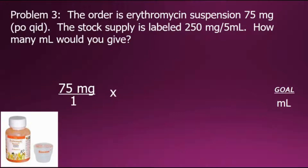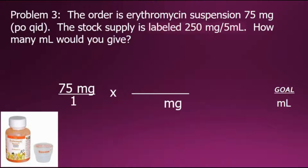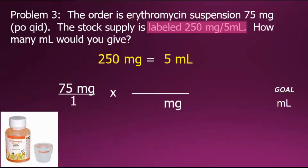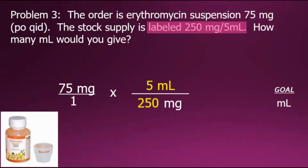Next, we create a conversion factor fraction to convert the current unit of milligrams into milliliters. Since we have milligrams in the numerator, our conversion fraction needs milligrams in the denominator so they cancel out. The problem indicates this medicine is available in a ratio of 250 milligrams per 5 milliliters, giving us two equivalent values. Placing equivalent values in the numerator and denominator creates a fraction with a value of 1.